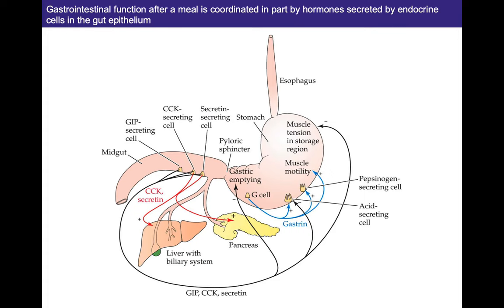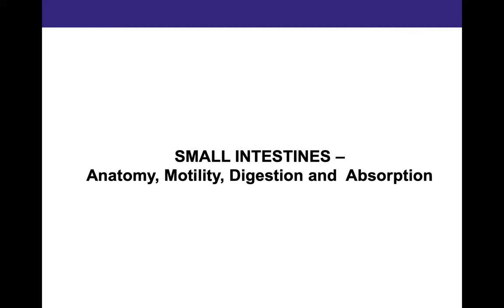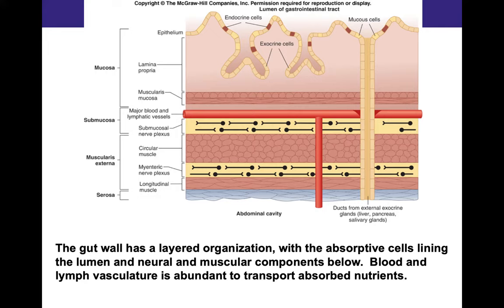Remember that these molecules feed back to the stomach to actually decrease gastric emptying. Let's start with the layers of the small intestines. These layers are divided into mucosa — this layer faces the lumen, the inside of the small intestines — and it has epithelial cells that line it. These are the barriers between the outside world and the inside of your body. There are different types of cells: exocrine and endocrine cells, and mucus-secreting cells.